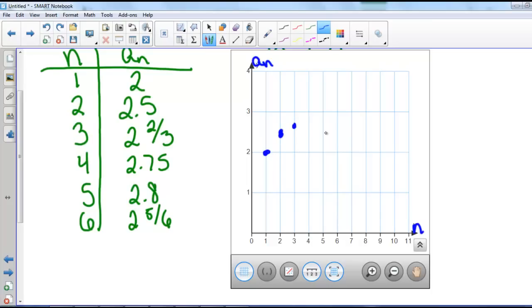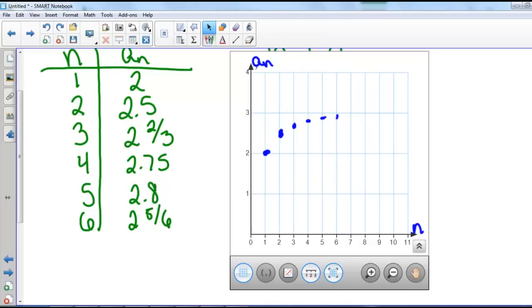When n is 4, we have 2 and 3 fourths. When n is 5, we have 2.8. 6 is 2 and 5 sixths. 7 was 2 and 6 sevenths. 8 was 2 and 7 eighths. At n equals 9, we had 2 and 8 ninths. And at n equals 10, we had that a sub n was 2.9.